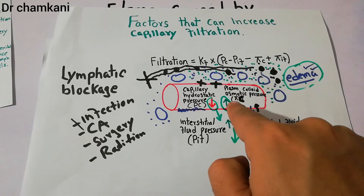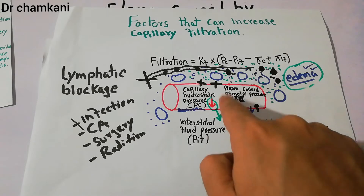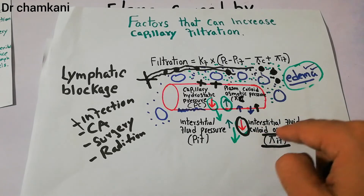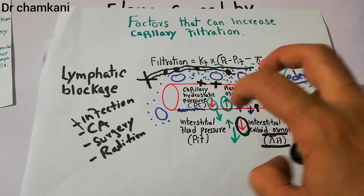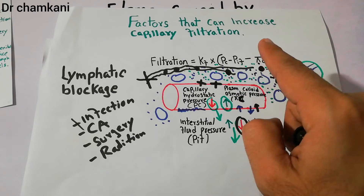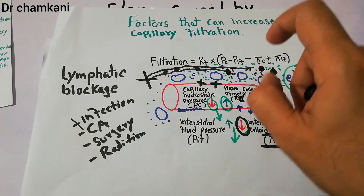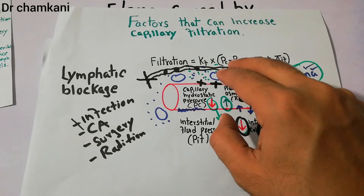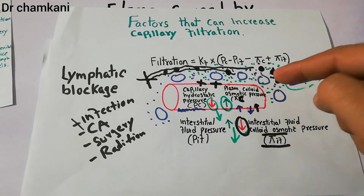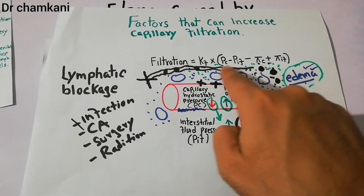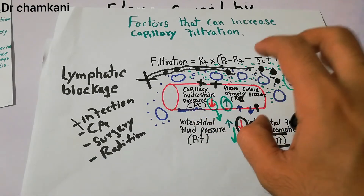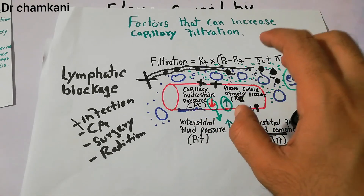When plasma colloid osmotic pressure decreases, it becomes very difficult to pull fluid into the capillaries. The capillary hydrostatic pressure, interstitial fluid pressure, and interstitial fluid colloid osmotic pressure — which pulls fluid out — remain normal. But this inward pull factor decreases due to decreased plasma proteins. So when the pull factor is removed, fluid tends to remain in the interstitium, and the amount of fluid in the extracellular spaces increases. That is how decreased plasma protein level leads to edema.